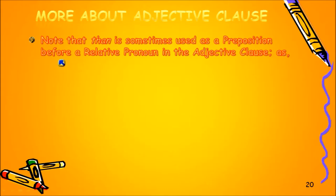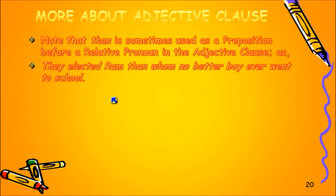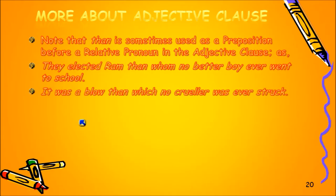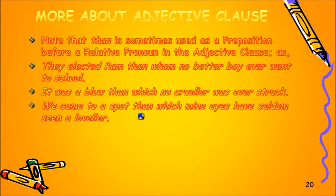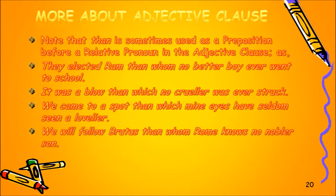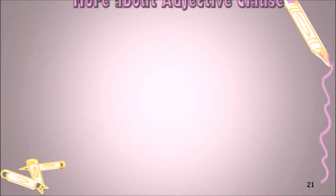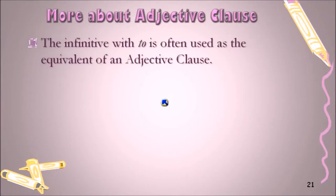Note that 'than' is sometimes used as a preposition before a relative pronoun in an adjective clause. For example: 'They elected Rum, than whom no better boy ever went to school.' The adjective clause 'than whom no better boy ever went to school' is introduced with 'than' as a preposition. Other examples: 'It was a blow than which no crueler was ever struck,' 'We came to a spot than which mine eyes have seldom seen a lovelier,' and 'Rome knows no nobler son than Brutus, than whom Rome knows no nobler son.'